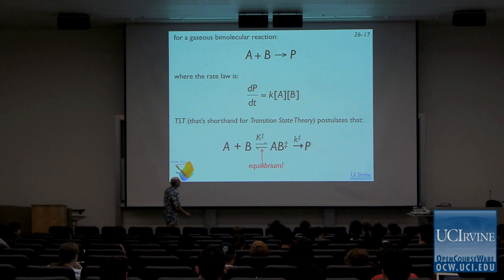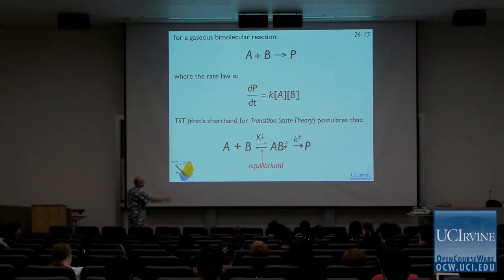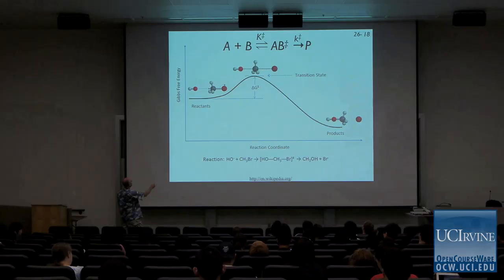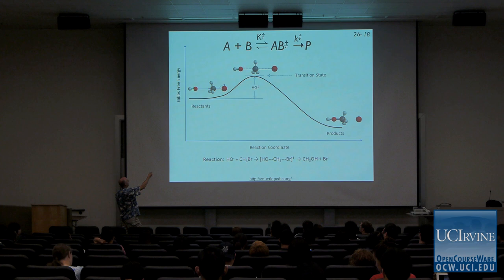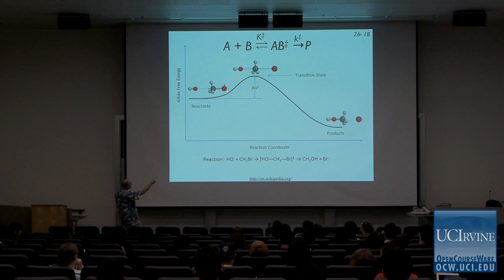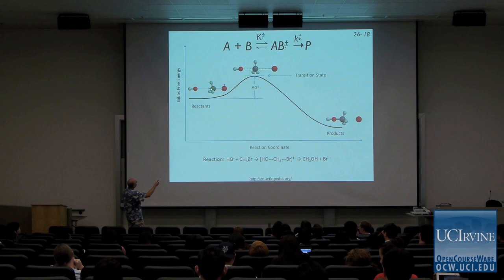One of the key points about transition state theory is that it postulates an equilibrium exists between this transition state and the reactants. Here's the picture in terms of energy. The notation applies specifically to transition state theory. You've got reactants — this looks like OH minus reacting with CH3Br — that's the transition state, and here are the products. In this reaction a new bond is formed between oxygen and carbon, and the bond between carbon and bromine is broken.